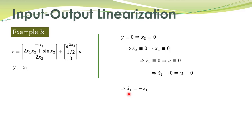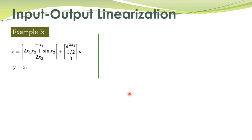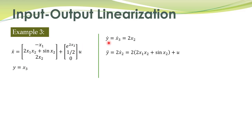Since the internal dynamics are asymptotically stable, input-output linearization will be useful to us. The next step is to find the relative degree. Taking the derivative of the output equation: y dot equals x3 dot equals 2x2. No control input appears here, so we take its second derivative. Therefore the relative degree of this system is equal to 2.